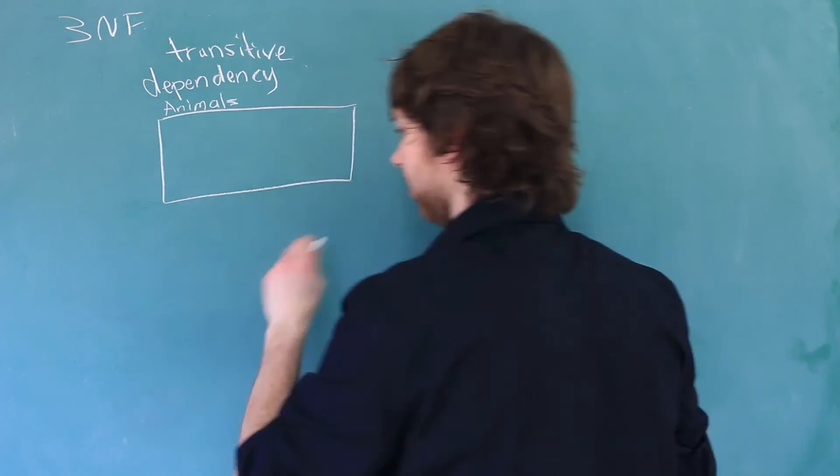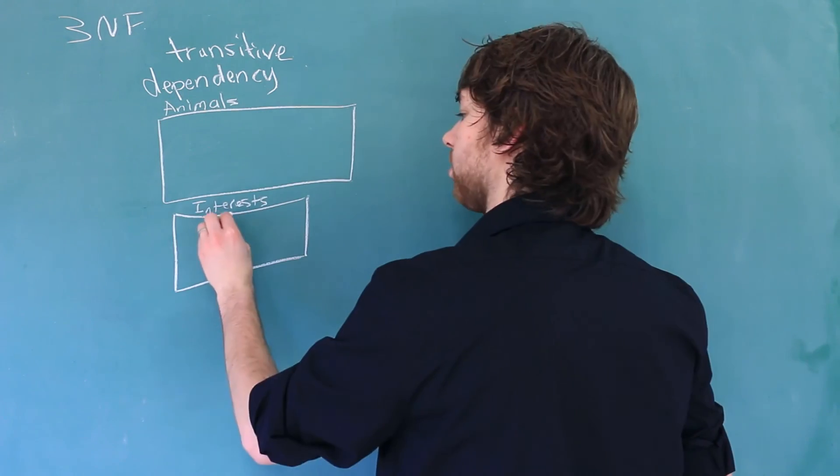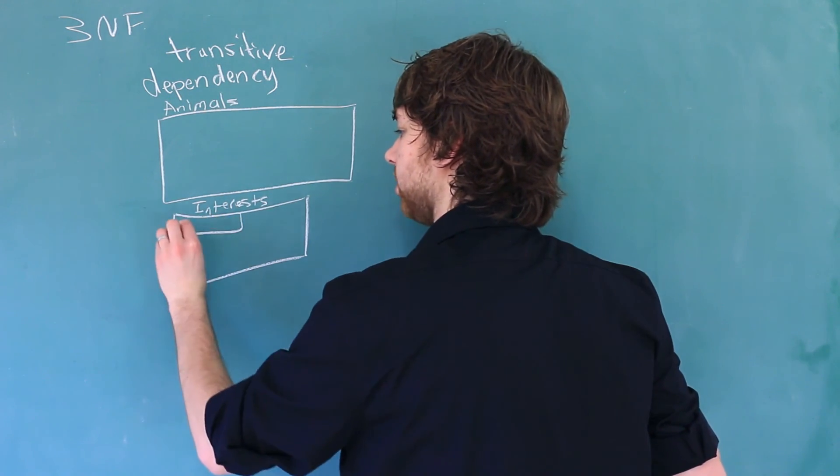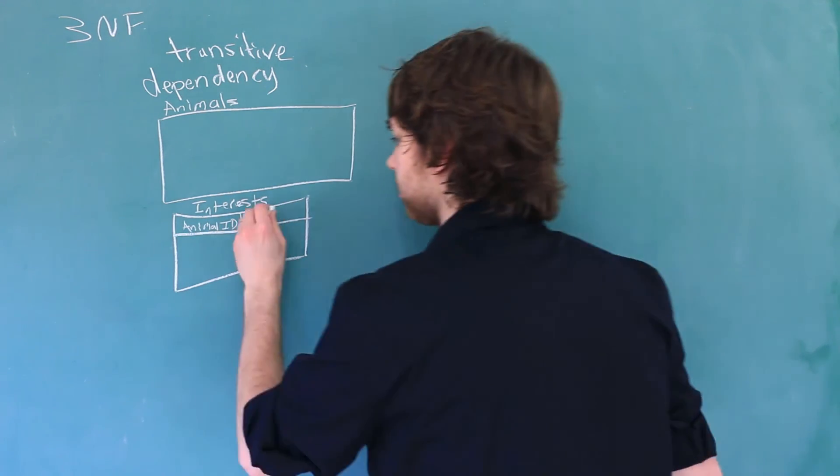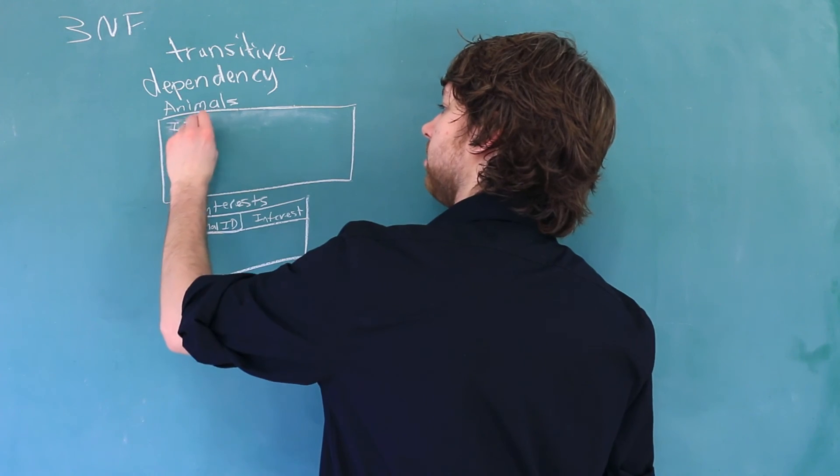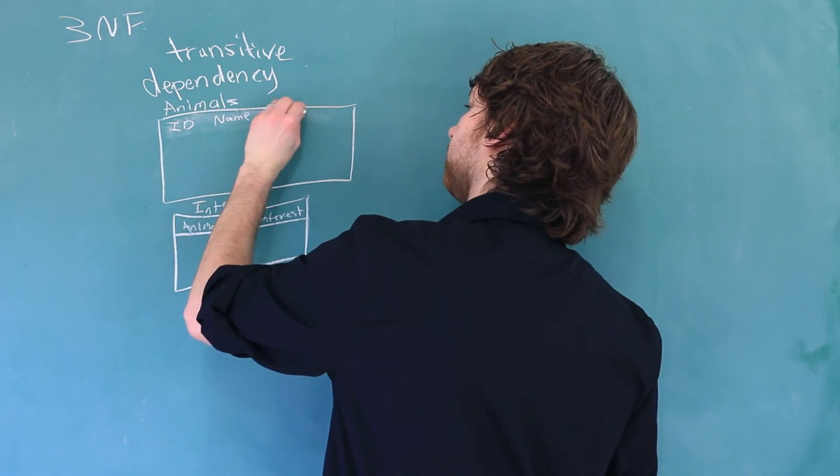So an animal could sign up and then say the different types of animals that they are interested in. So the structure was something like this. We had the animals table and then we had an interests table. One of the columns in here was an animal ID. The other column was an individual interest.